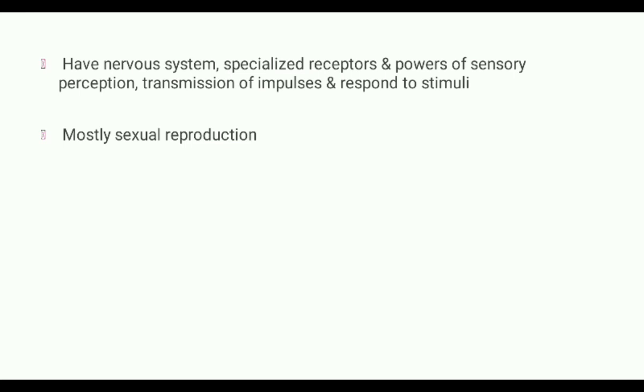Development is of two types: direct development and indirect development. In direct development, the zygote develops directly into a young adult form. In indirect development, there are larval stages, and the embryo passes through a larval stage before becoming an adult — this is called indirect development.